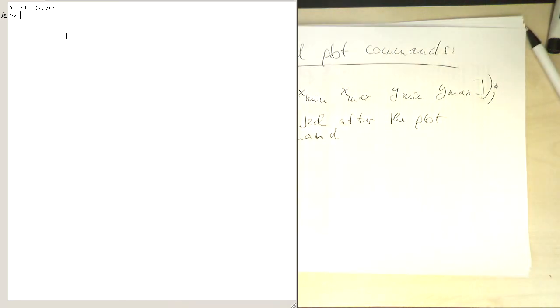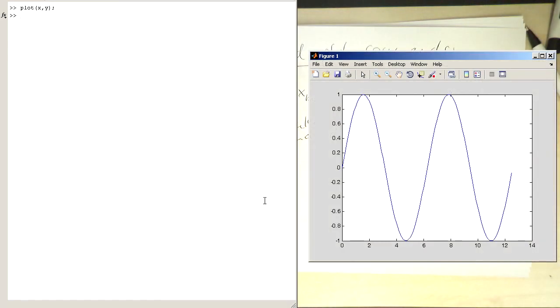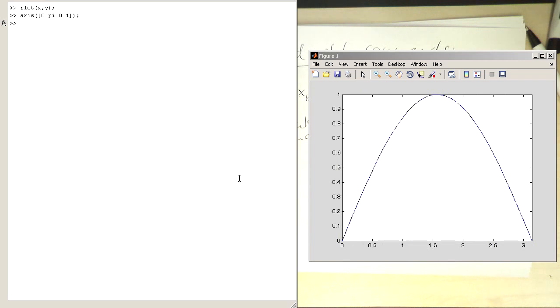So if you want to change the axis, let's bring the plot back up here again. So if we do zero to pi and from zero to one then hopefully we see the first hump. Yeah, and this is the case.